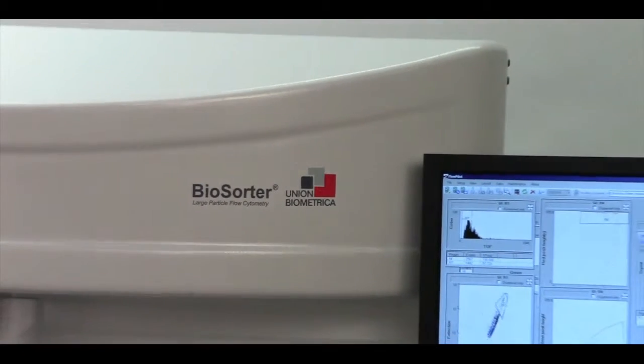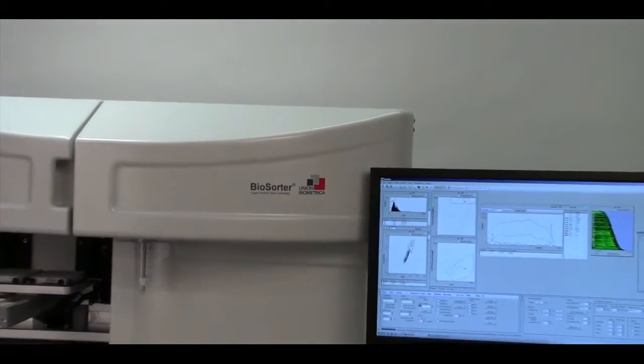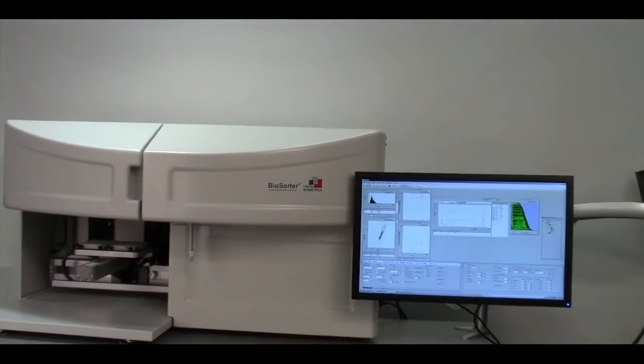Union Biometrica's Biosorter instrument is designed to be a flexible platform for the analysis and sorting of objects in the 10 to 1500 micron size range.